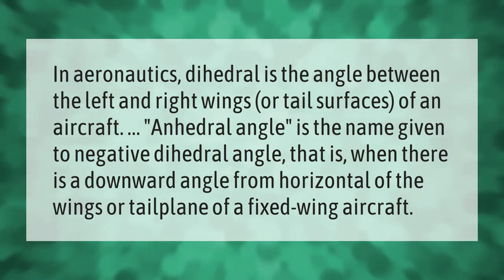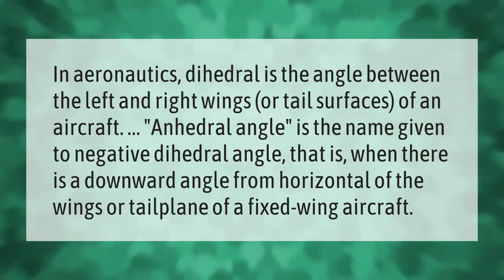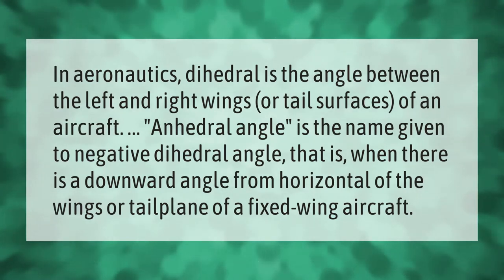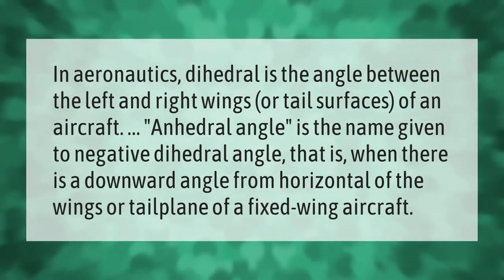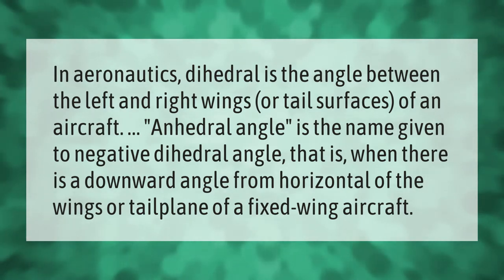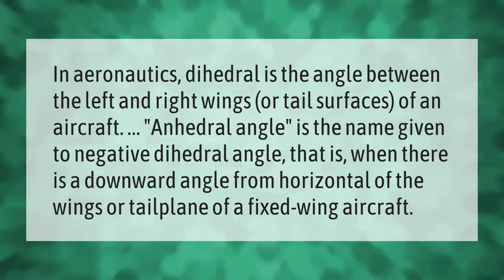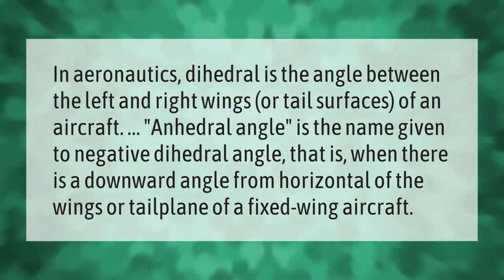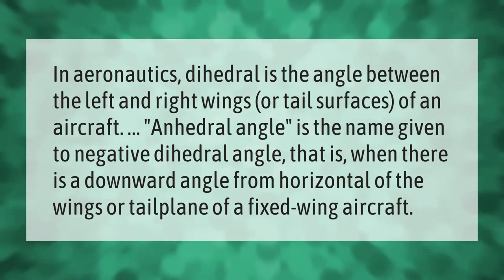In aeronautics, dihedral is the angle between the left and right wings or tail surfaces of an aircraft. Anhedral angle is the name given to a negative dihedral angle — that is, when there is a downward angle from horizontal of the wings or tailplane of a fixed-wing aircraft.